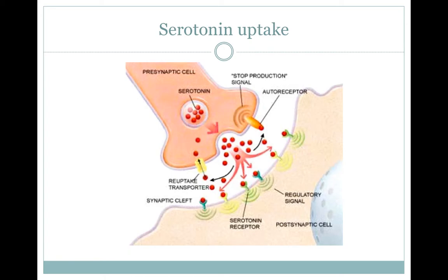In the brain, MDMA can diffuse into the synaptic clefts of neuronal connections. It blocks the transmission and uptake of key neurotransmitters — primarily serotonin, but also dopamine and noradrenaline. MDMA binds to the serotonin transporters of the presynaptic cell, resulting in their inhibition. Normally, a synapse would release excess serotonin into the cleft, and any neurotransmitter not taken up by the postsynaptic serotonin receptors would be reabsorbed by the uptake serotonin transporters of the releasing neuron.